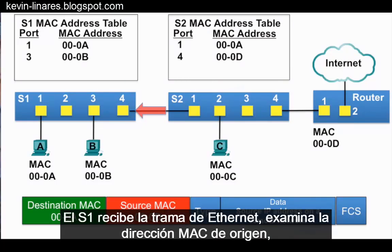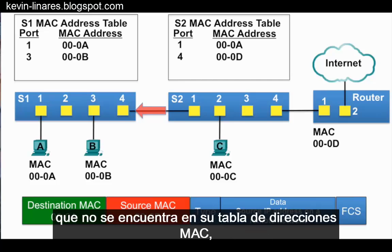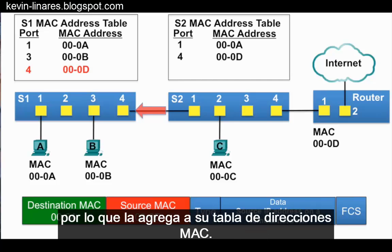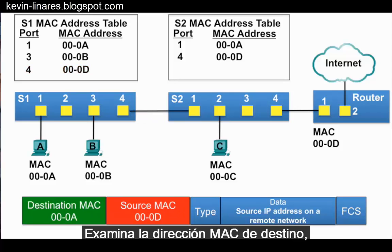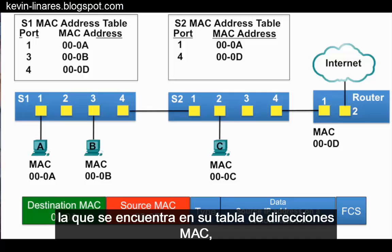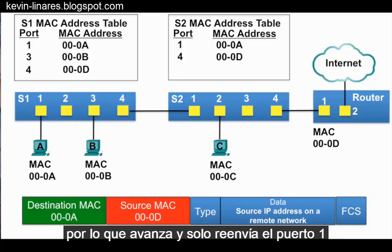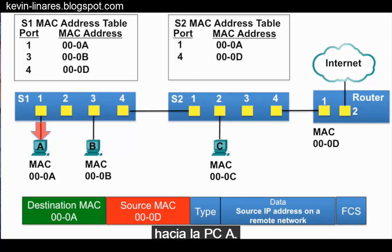S1 receives the Ethernet frame and examines the source MAC address, which is not in its MAC address table, so it adds it. It then examines the destination MAC address, which is in its MAC address table, so it forwards it out port 1 towards PCA.